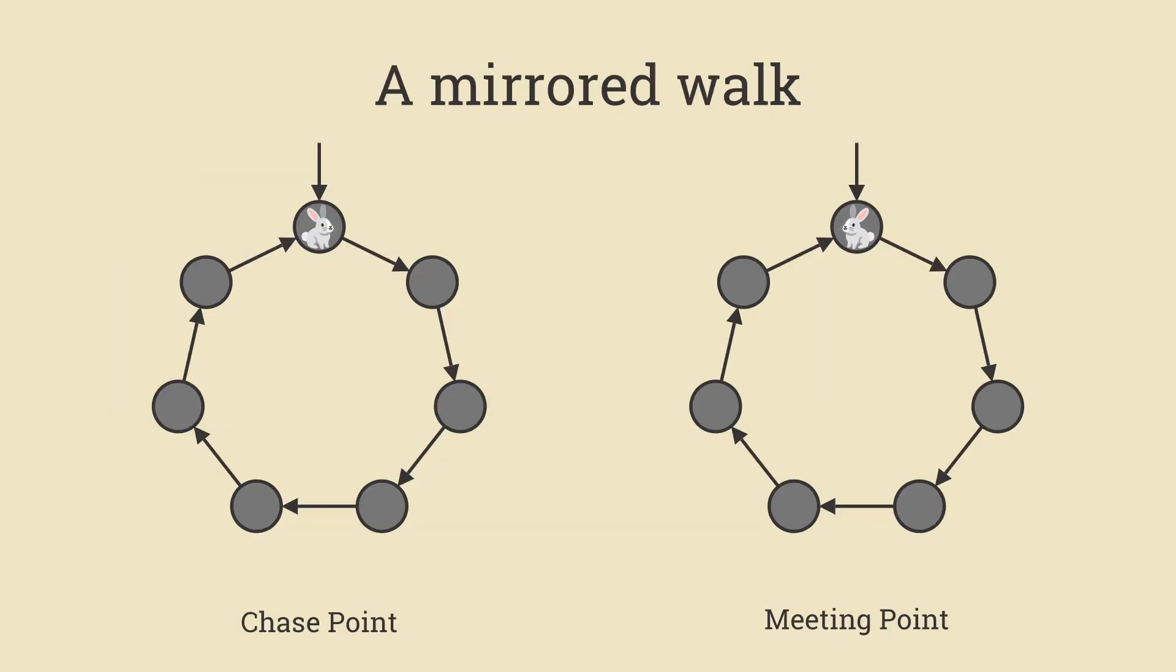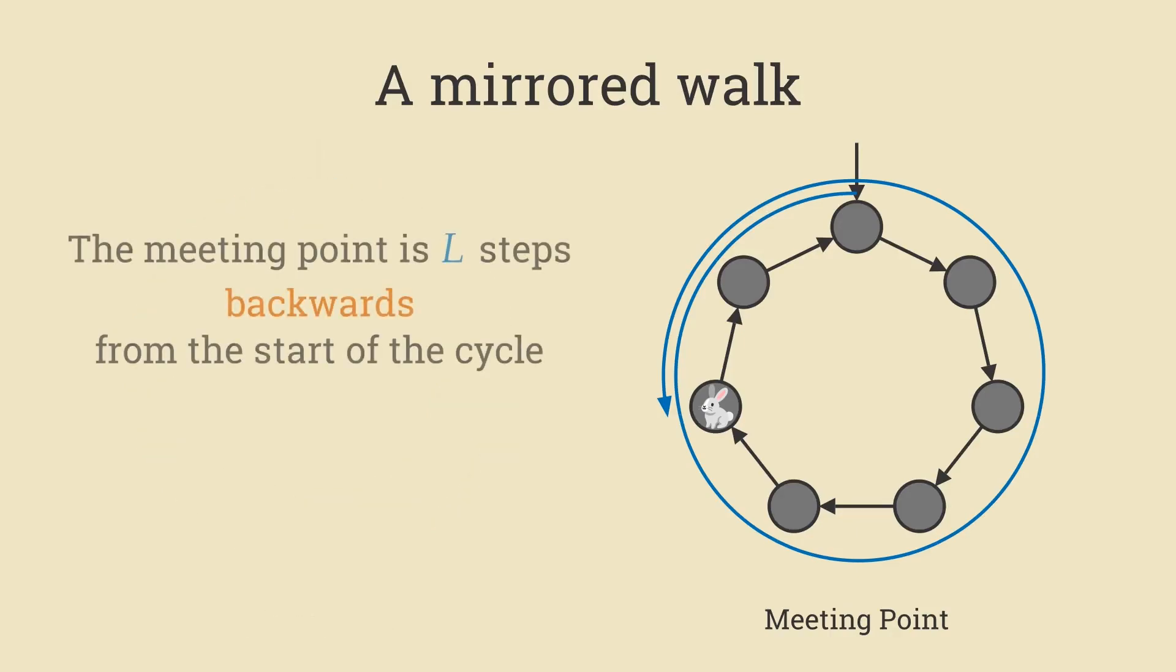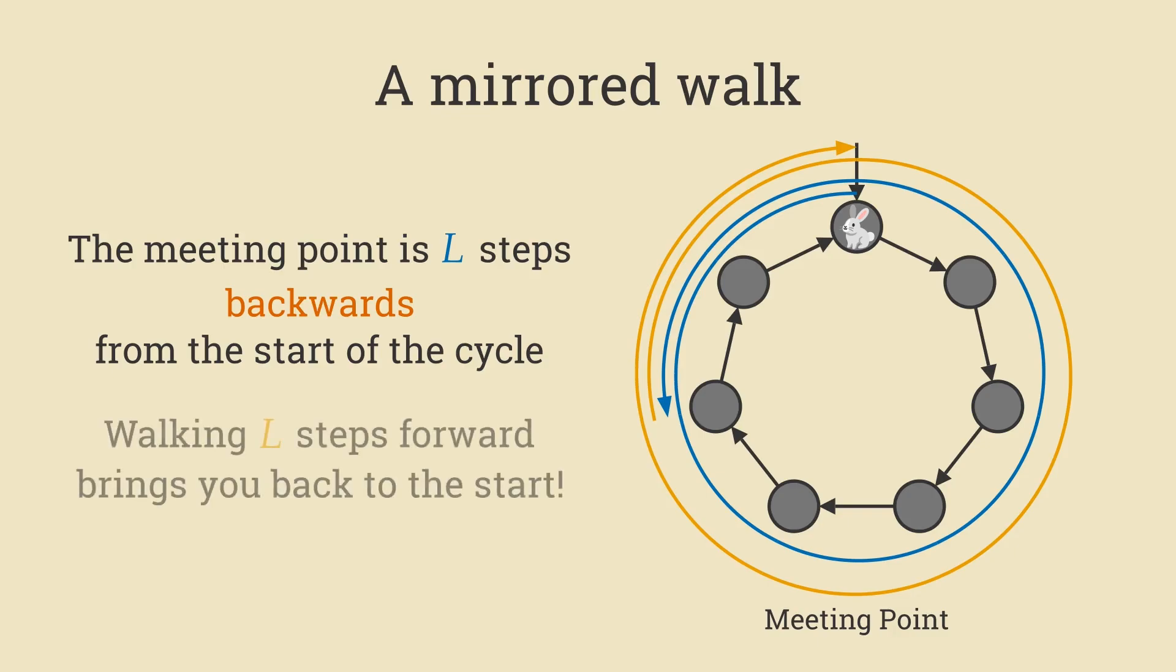Earlier, we stated that the chase point is the result of walking L steps clockwise from the start of the cycle. If we reflect this entire animation, then the meeting point must be where you get from walking L steps counterclockwise, or in other words, L steps backwards from the start of the cycle. Now, if you ever take the same number of steps backwards and forwards, you end up back where you started. Meaning that if you were to walk L steps forwards from the meeting point, you get to the beginning of the cycle. And remember, that's exactly the claim that we needed to prove.